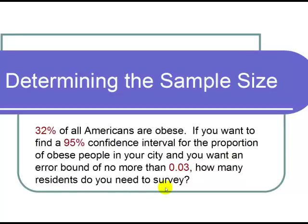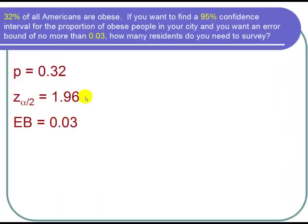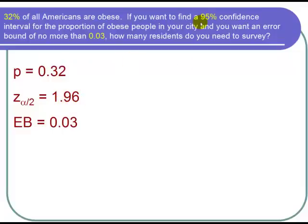Let's start by finding our cast of characters. Our preliminary estimate is 0.32, and I call that P for proportion, because we know the percentage of all Americans who are obese — that's our preliminary guess for our town's percent. We want a 95% confidence interval, so Z sub alpha over 2 is equal to 1.96. And our error bound is 0.03.